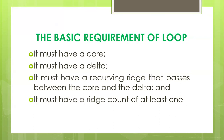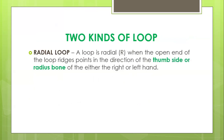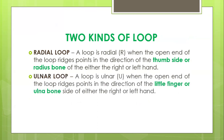There are two kinds of loop. We have the radial loop and the ulnar loop. The radial loop is when the open end of the looping ridges points toward the thumb side or radius bone of either the left or right hand. The ulnar loop is when the open end of the looping ridges points toward the little finger or ulna bone of either the right or left hand.